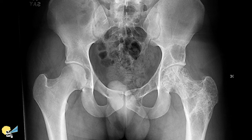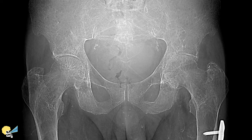On the other end of the spectrum, we have a case of thalassemia, where we can see diffuse osteopenia and apparent prominent trabeculae, especially at the right proximal femur. But as you can imagine, this is sort of an optical illusion, and the trabeculae are in reality thinner even though they look more prominent.